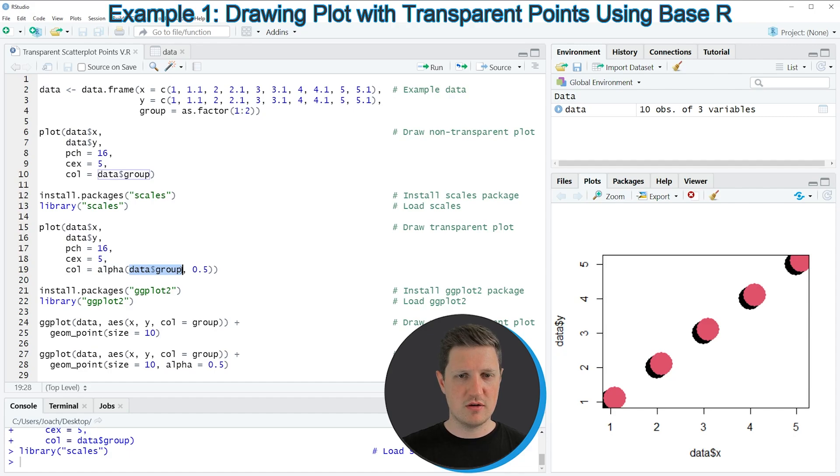I'm specifying the grouping column of our data, and I'm also specifying an alpha value that is responsible for the opacity of our points.